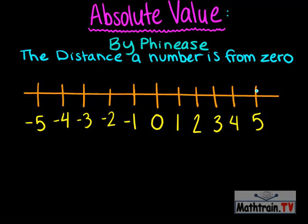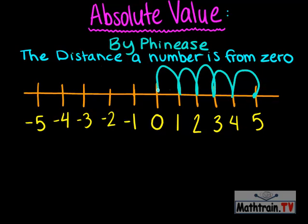Let's see how far five is from zero. One, two, three, four, five. So that means the absolute value of five equals five.